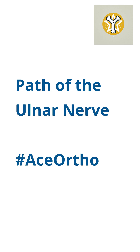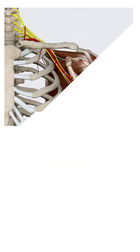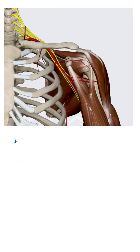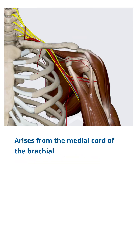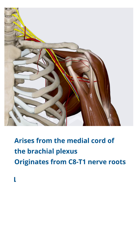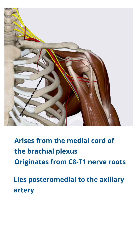Let's go through the path of the ulnar nerve. The ulnar nerve arises from the medial cord of the brachial plexus, root C8 and T1. It lies posteromedial to the axillary artery.